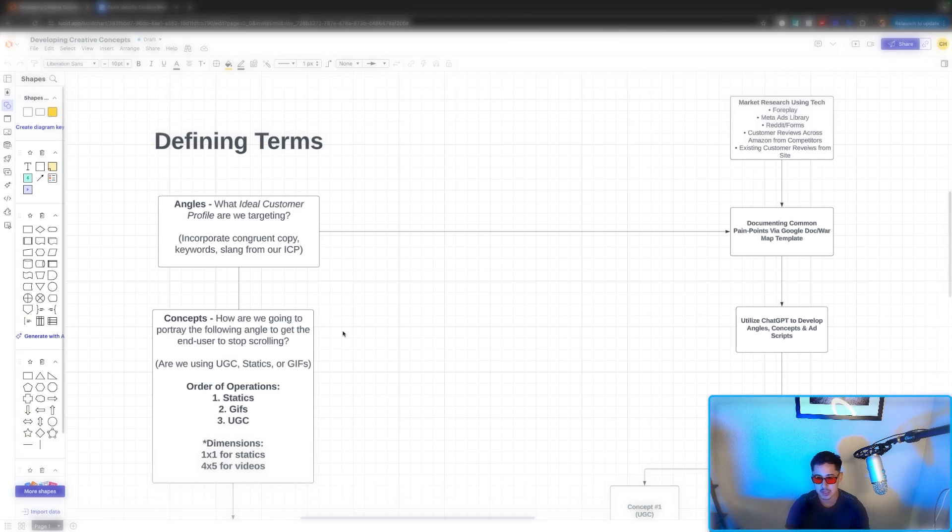It really depends on the content creator, how good the quality of content is shot, and ultimately how good your editor is in post-production to make the UGC feel native. But all in all, the dimensions, as far as just the way we go about our testing, we start off with statics first and GIFs, then UGC. Pretty simple.